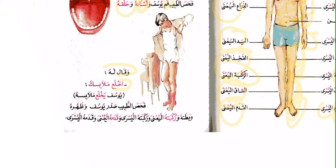وقال له: اخلع ملابسك — he tells him to remove his clothes. اخلع is the command form from خلع, present tense يخلع. ملابس means clothing. يوسف يخلع ملابسه — Yusuf takes off his clothing. فحص الطبيب صدر يوسف وظهره وبطنه وركبته — the doctor inspects the chest, back, belly, and knees of Yusuf, including his right and left knee and his right and left foot.